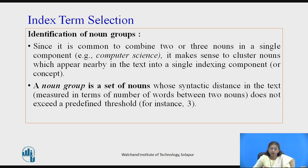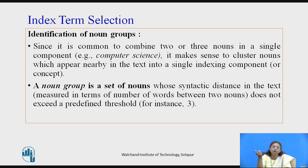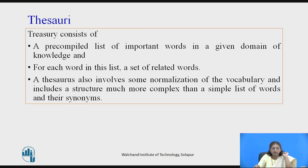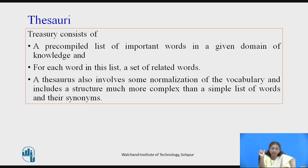A noun group is a set of nouns whose syntactic distance in a text, measured in number of words, does not exceed a predefined threshold. For example, if we define a threshold of three, then maximum three words can be combined into one component — for instance, 'information retrieval'. After identifying index terms, the next step is creation of the thesaurus. The word 'thesaurus' comes from 'treasury'. It is a precompiled list of important words in a domain of knowledge, and for each word we have a set of related words.